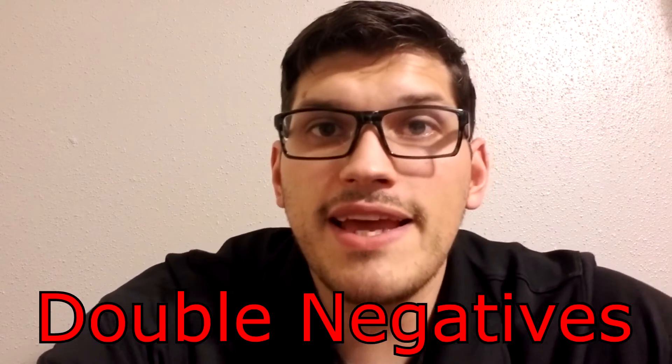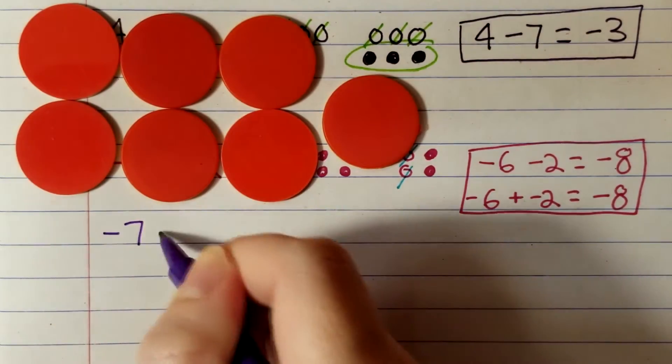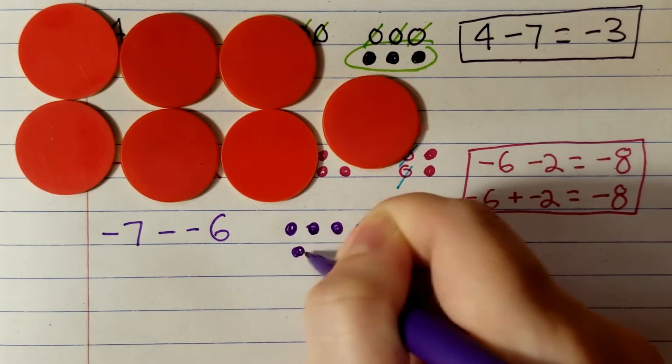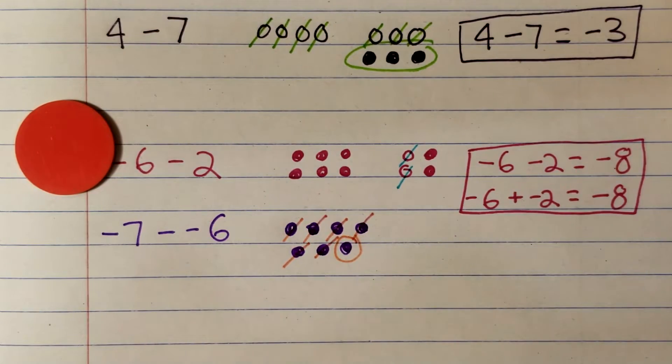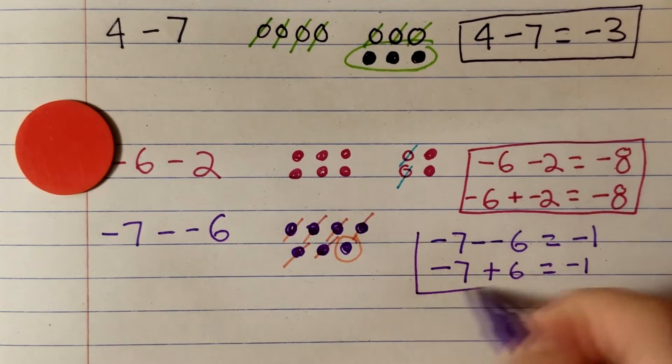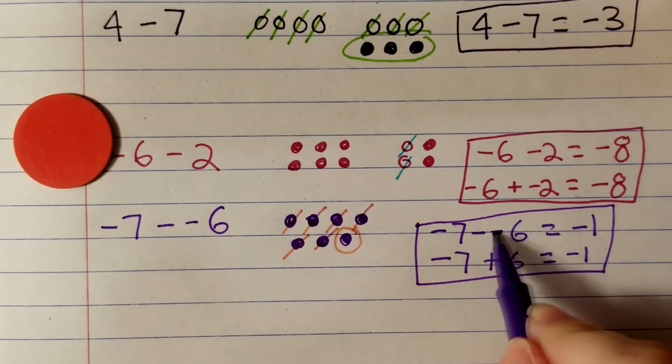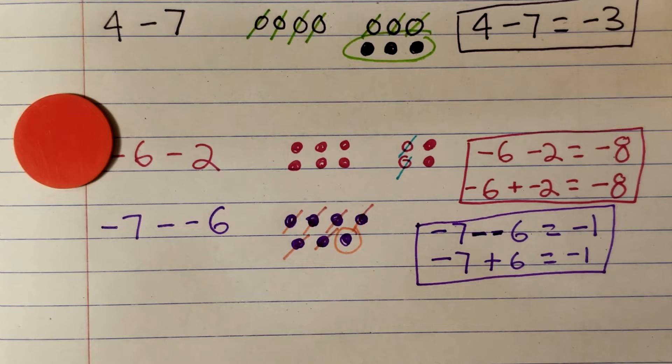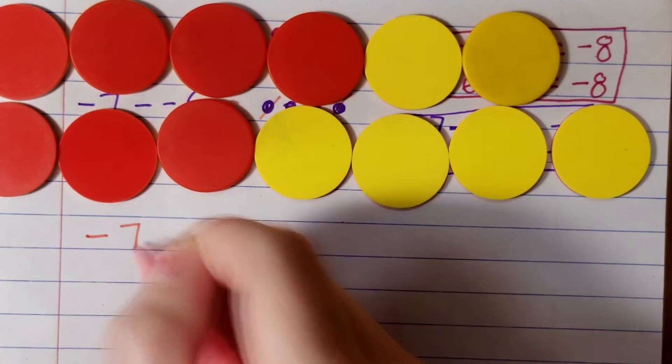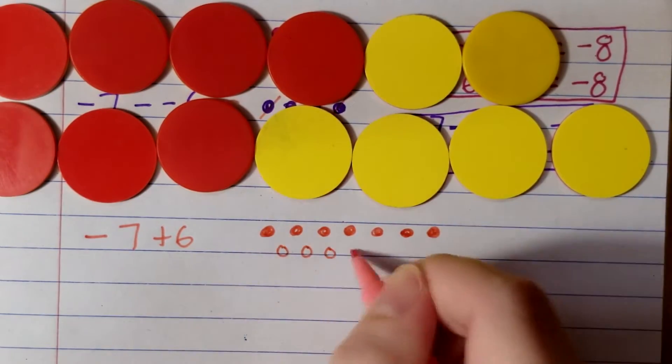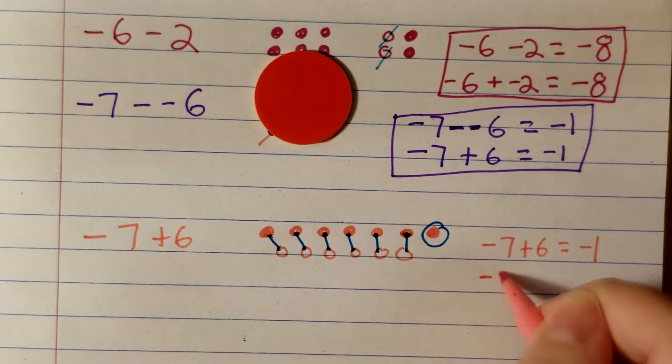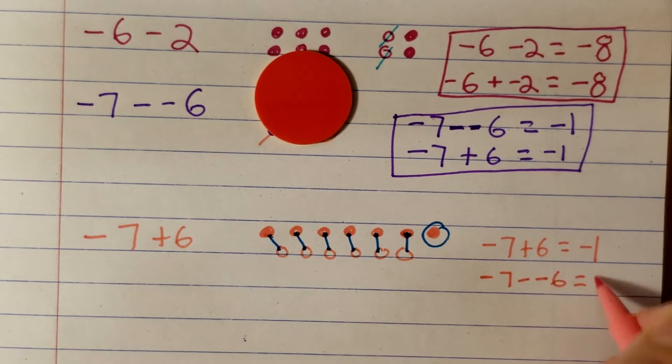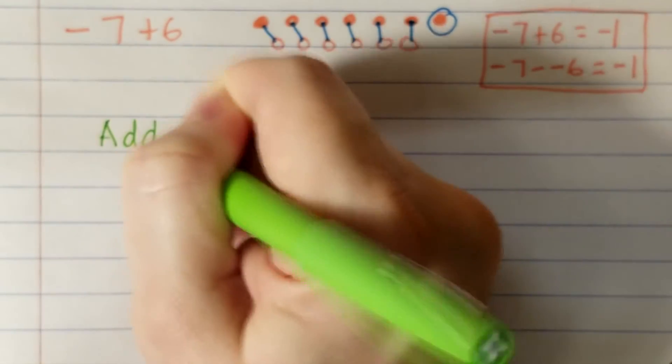We have one more example. Double negatives. Negative seven minus negative six. Here we have negative seven and we're going to take away negative six. We are left with one negative. Seems pretty simple, right? You could also try what we did in the last video. Double negatives makes a positive and rewrite the problem as negative seven plus six and cancel out positives and negatives with zero pairs. So the answer to negative seven minus negative six equals negative one.